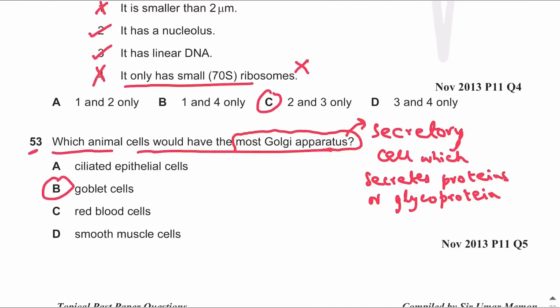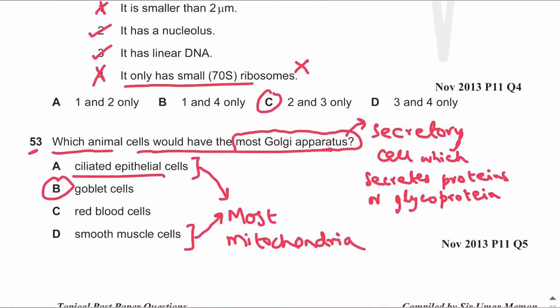Ciliated epithelial cells and smooth muscle cells contain the most mitochondria because they are highly active cells requiring lots of ATP. Ciliated epithelial cells have cilia that move and sweep mucus, while smooth muscle cells contract — both processes require ATP. Red blood cells, on the other hand, have no organelles; they contain only cytoplasm with hemoglobin.